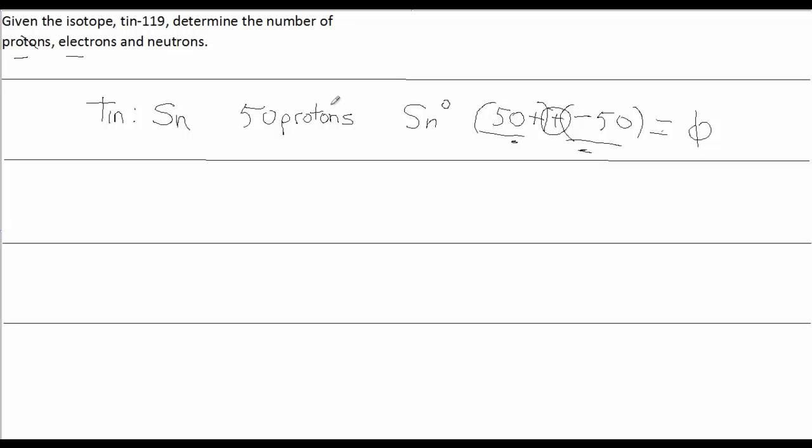So in this case, if we assume, and always assume this unless you're told, always assume there's zero charge on the atom, unless you're told otherwise. So, we've pretty much answered the electron question.